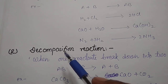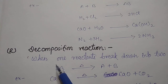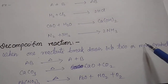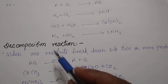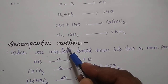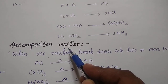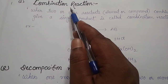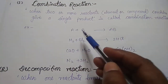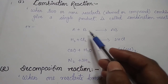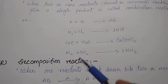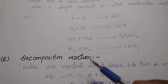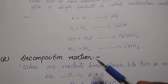Second, decomposition reaction. When one reactant breaks down into two or more products, that will be a decomposition reaction. We can say it is just the opposite of combination reaction, because in combination, more reactants combine to give a single product, whereas in decomposition, one single reactant gives more products.